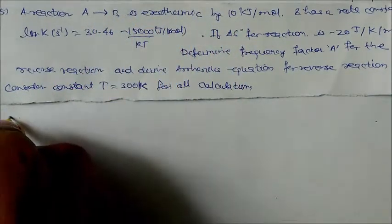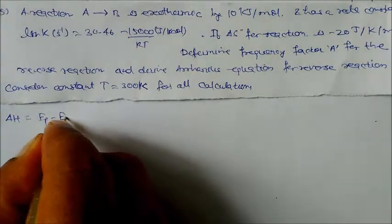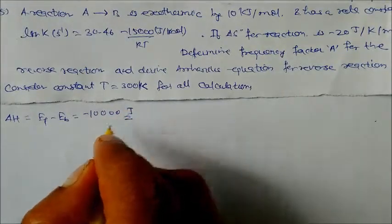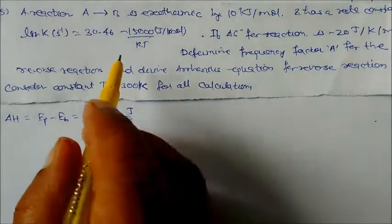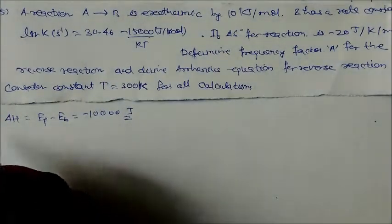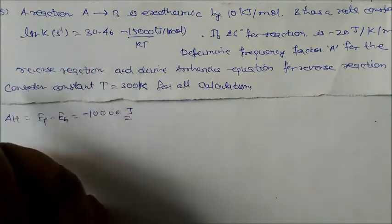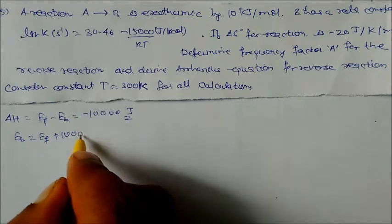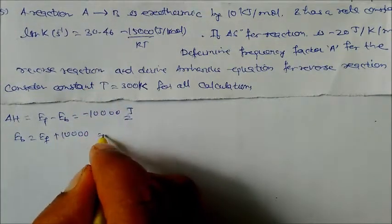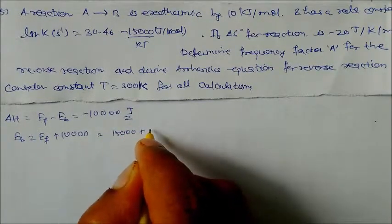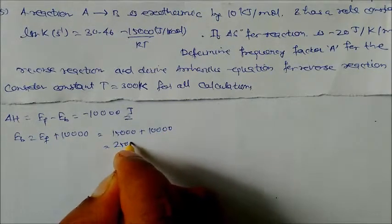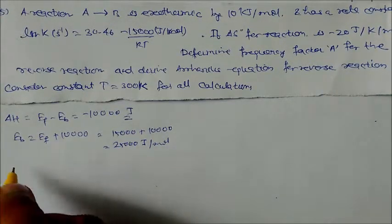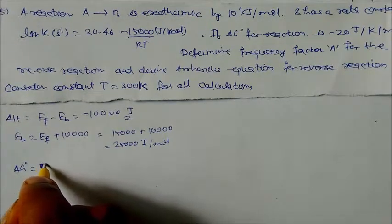Delta H = Ef minus Eb = minus 10,000 J. So Eb = Ef + 10,000. Since the forward activation energy Ef = 15,000 J/mol, we get Eb = 15,000 + 10,000 = 25,000 J/mol for the backward reaction.